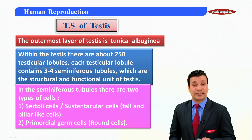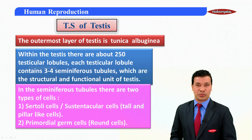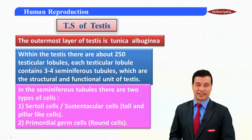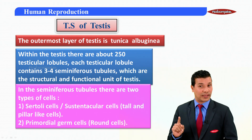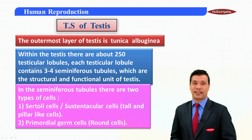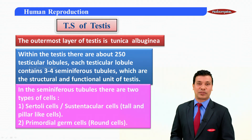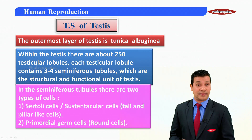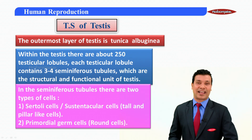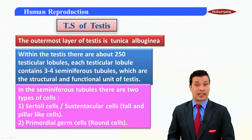In the seminiferous tubules there are two types of cells. The first one is the Sertoli cells, which are also known as the sustentacular cells. These are tall and pillar-like cells.